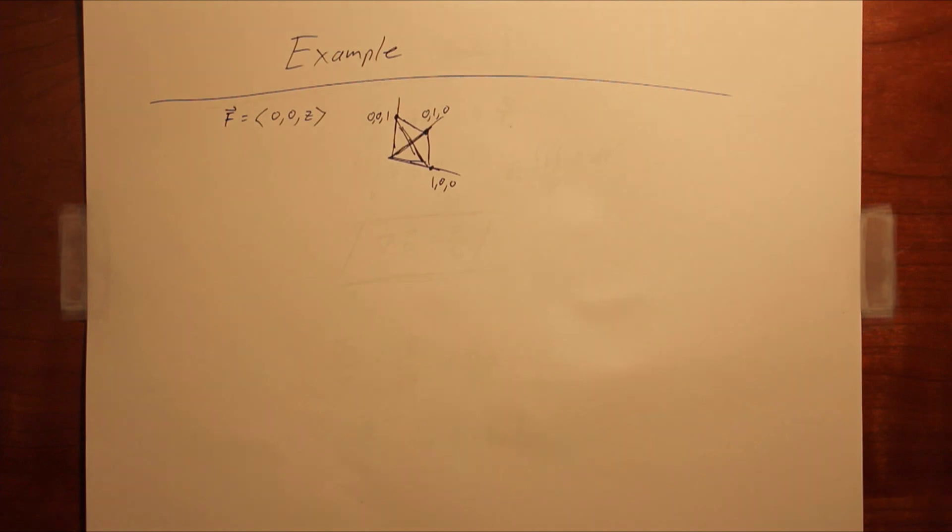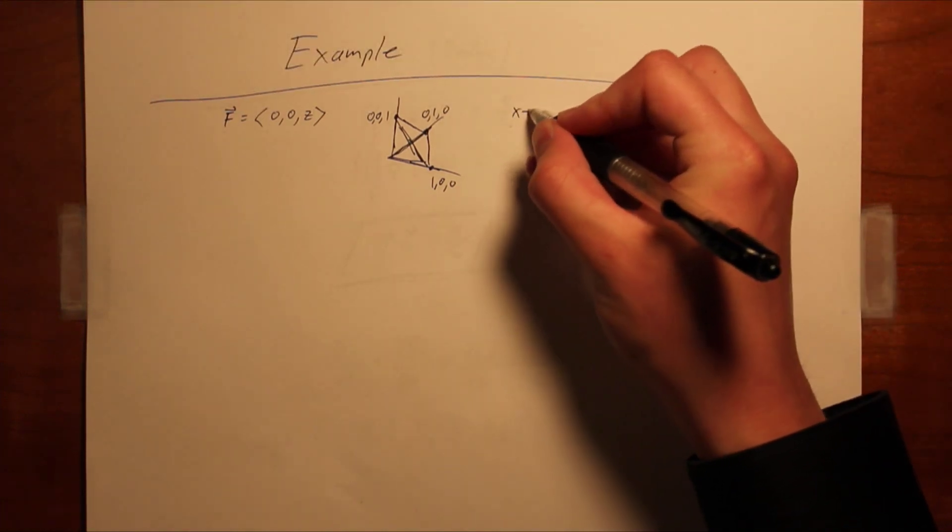We can solve this first as a basic surface integral problem, and then again using the divergence theorem to show that the two are equivalent. If we want to use the standard method of evaluating surface integrals, first we need to find unit normal vectors. Note that we need only concern ourselves with the angled surface, because the flux of the other three sides will each be zero, as the field is parallel to the xz and yz planes, and it is a value of zero all along the xy plane. By intuition, it is relatively clear that the normal is constant and in the direction 1, 1, 1, but for validation, we can try our more general methods.